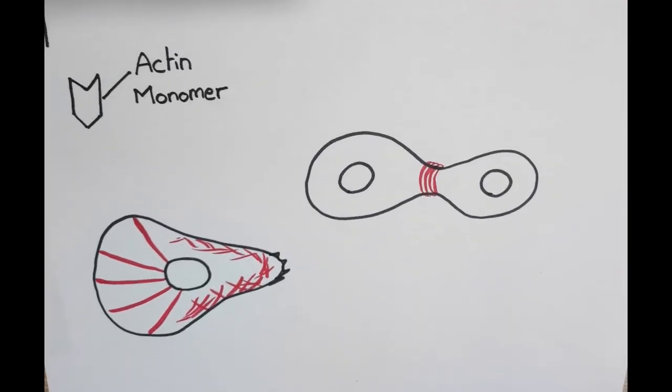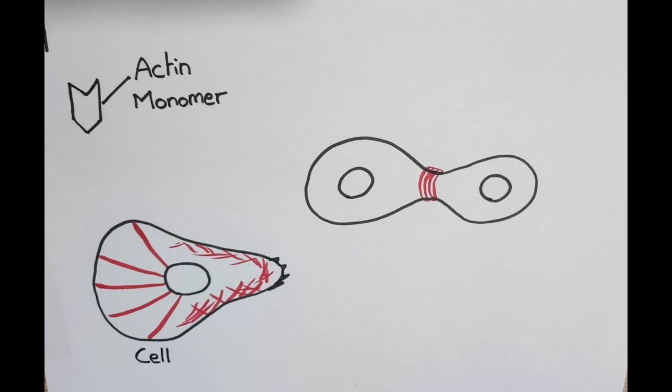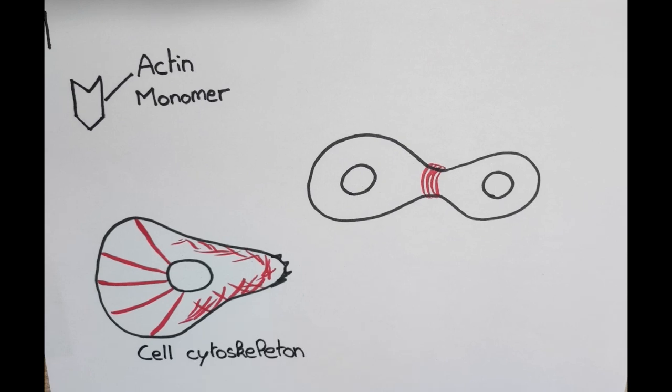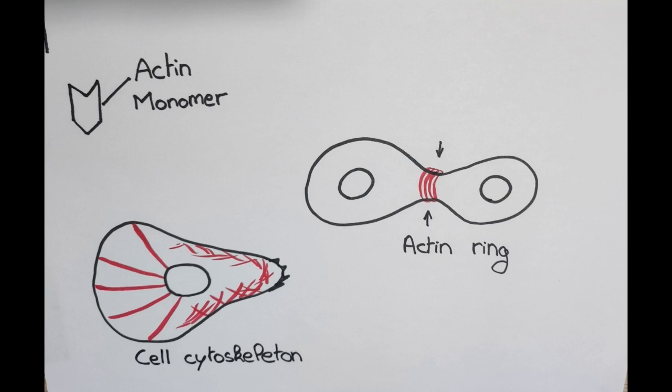It uses actin monomers already present inside the cell. Actin monomers are bricks very useful in cell operation, like in cytoskeleton giving the shape of the cell, or as actin ring separating cells in cell division.